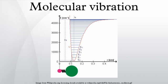For illustration, the atoms in a CH2 group, commonly found in organic compounds, can vibrate in six different ways: symmetric and asymmetric stretching, scissoring, rocking, wagging and twisting as shown here.